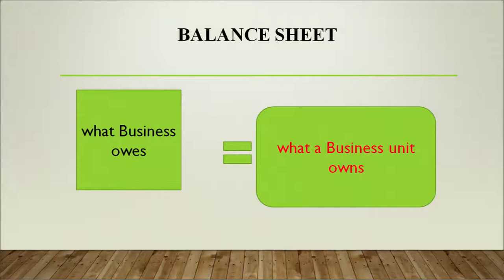Your non-current liabilities are those obligations which can be paid beyond one year. But current liabilities are obligations that have to be met within one year of the date of the balance sheet. We can now arrive at the conclusion that liabilities represent what business owes to others, and it must always be equal to what the business unit owns — the resources it owns.